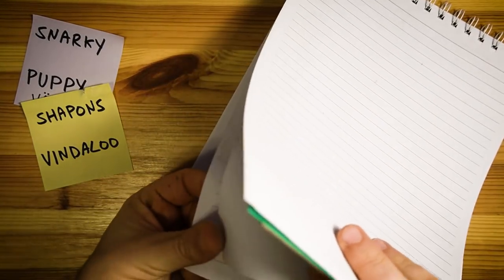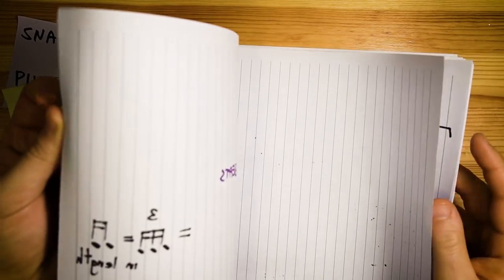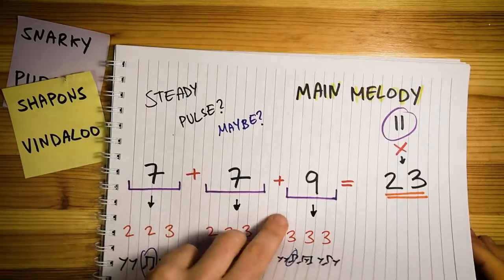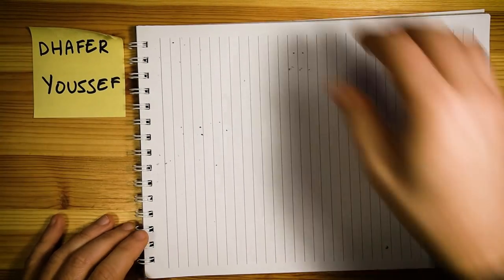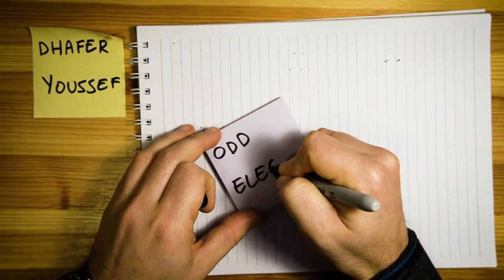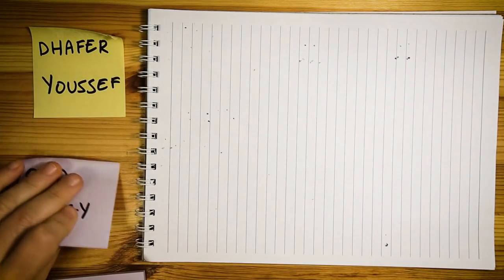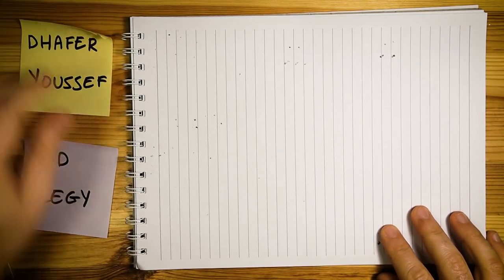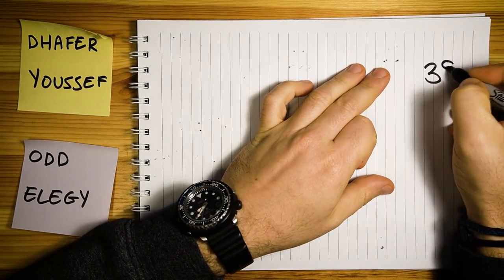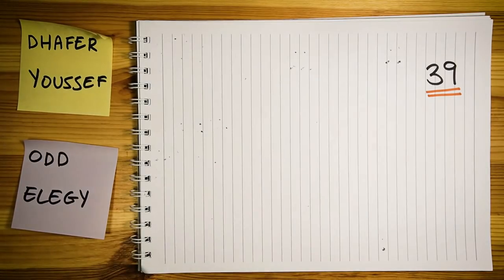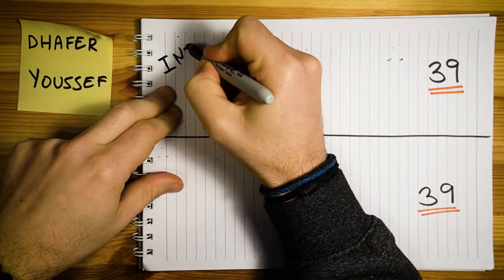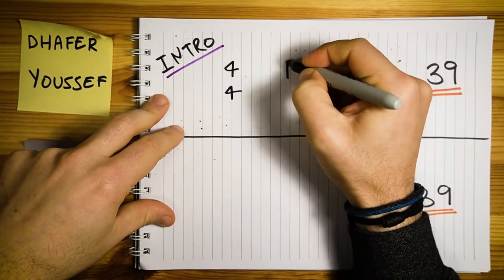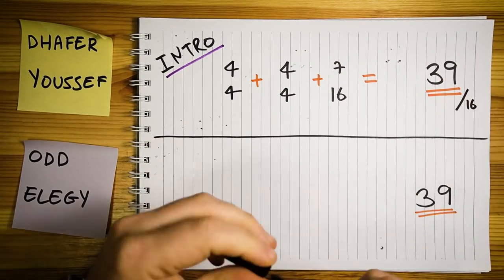Moving on to Daffer Youssef, and his monster song, Odd Elegy. This piece has a similar time signature idea, but it's a bit longer. 39 beats. And in this song, this composite time signature is broken down in two different ways. For the intro, I feel it as 2 bars of 4-4, and 1 bar of 7-16, mostly because of the backbeat Mark Juliana plays.